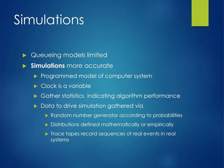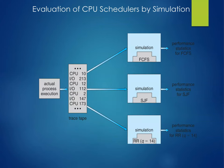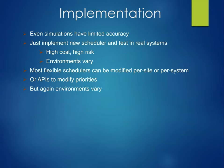We can also run simulations — they tend to be more accurate. A simulation is a program model of the computer system where the clock is a variable. We gather statistics and drive the simulation via random number generators, mathematically defined distributions, or trace tapes that record sequences of real events. However, even simulations have limited accuracy. Just implementing a new scheduler and testing it in a real system is high cost and high risk, and environments can vary — don't do that.